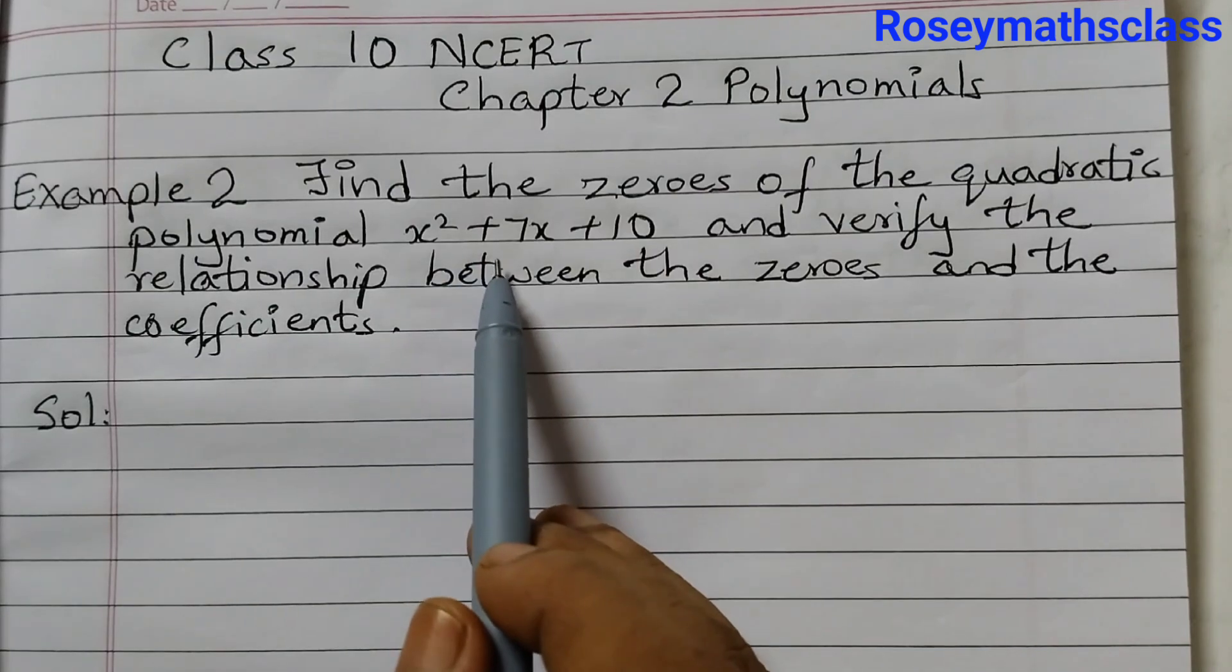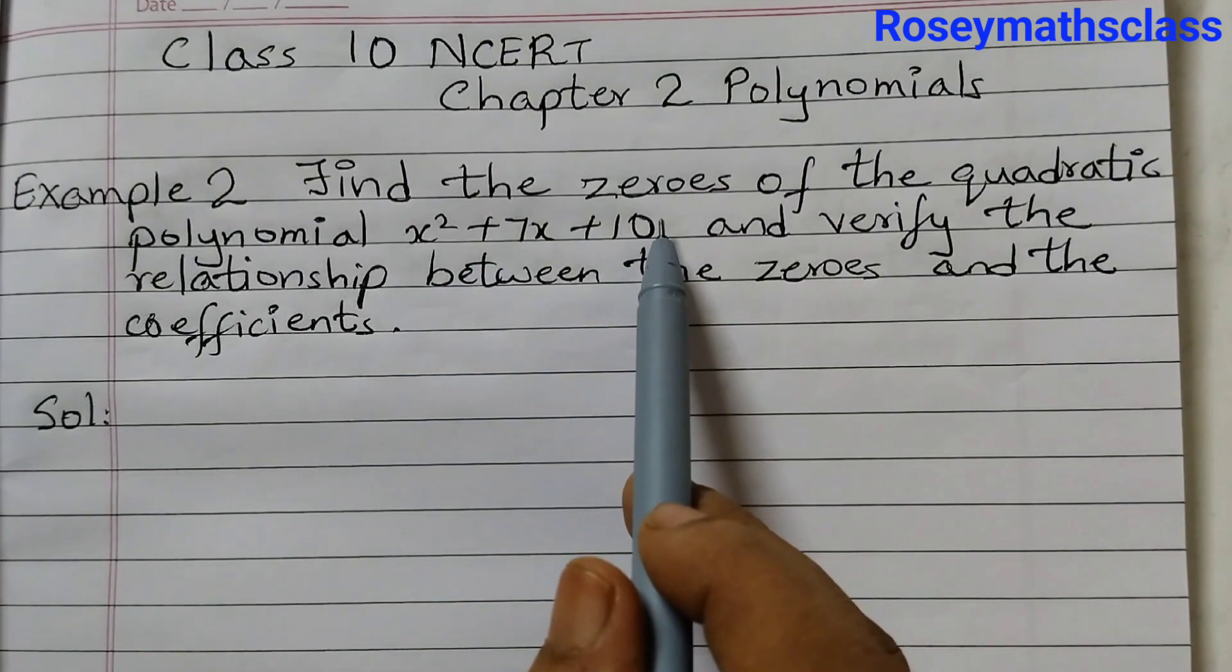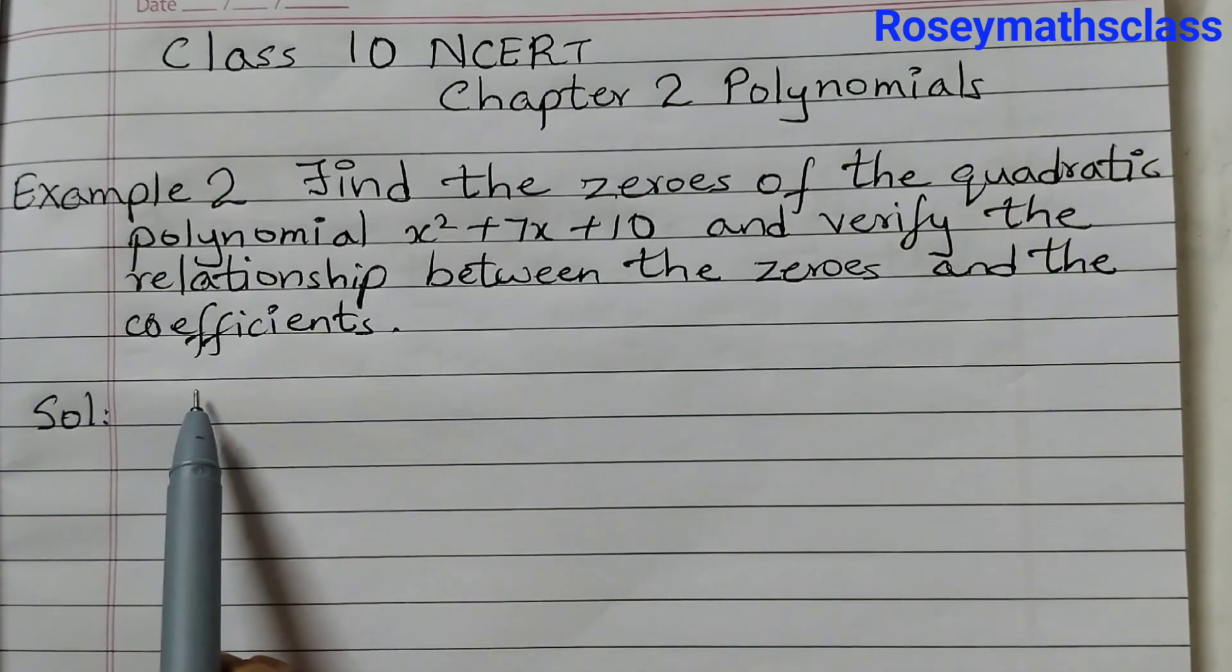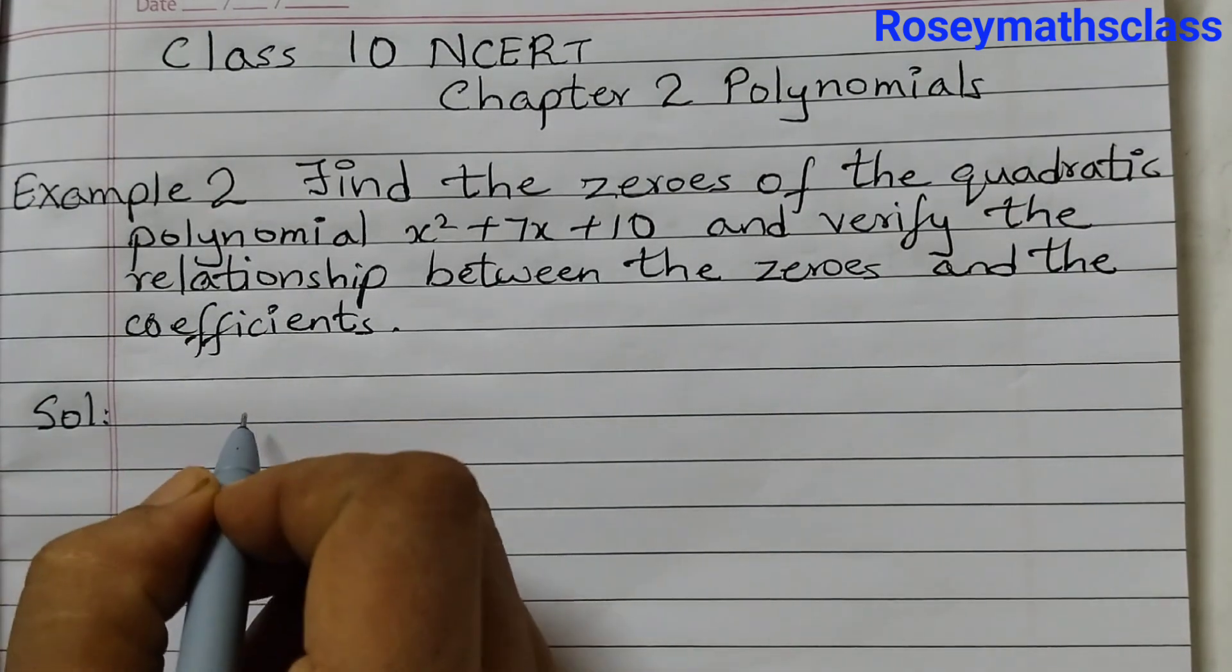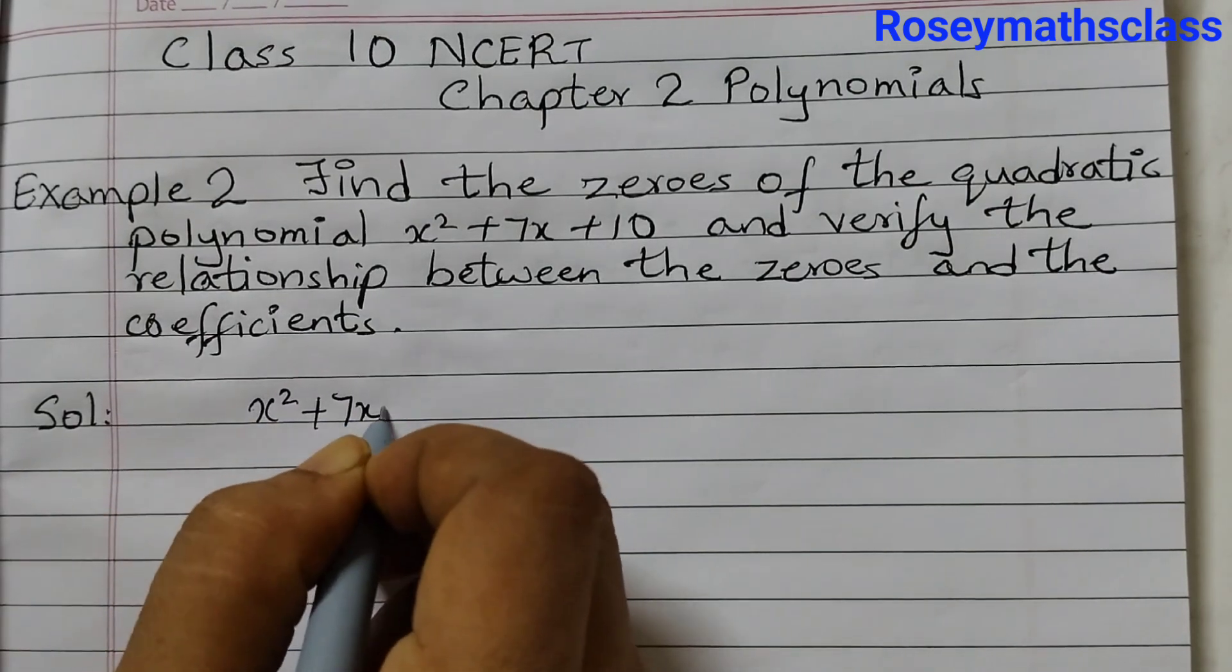So here we got a quadratic polynomial, we need to find out the zeros of this polynomial and then verify the relationship between the zeros and the coefficients. So let's find out the zeros x squared plus 7x plus 10.